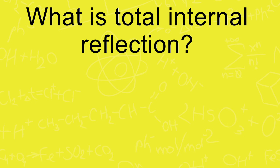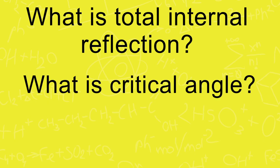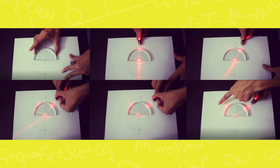So today we learned two things: what total internal reflection is, and what the critical angle is — the specific angle at which light starts reflecting inside the second medium rather than passing through. We also got to observe how the angle of incidence and the angle of refraction differ. That's it for today — one small activity, one new topic. See you in the next class!